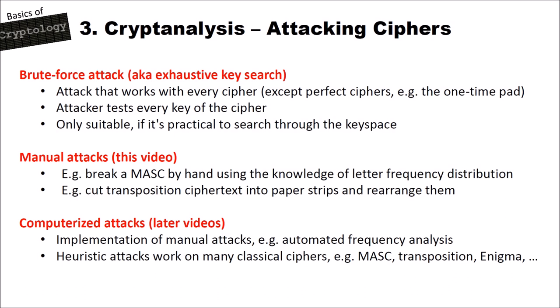For manual attacks, there are two examples. First, we can break a monoalphabetic substitution cipher by hand using knowledge of letter frequency distribution, which we will look at in the next slides. Second, we can cut a ciphertext encrypted with a transposition cipher into paper strips and rearrange them — we will also look at this attack in the later slides.